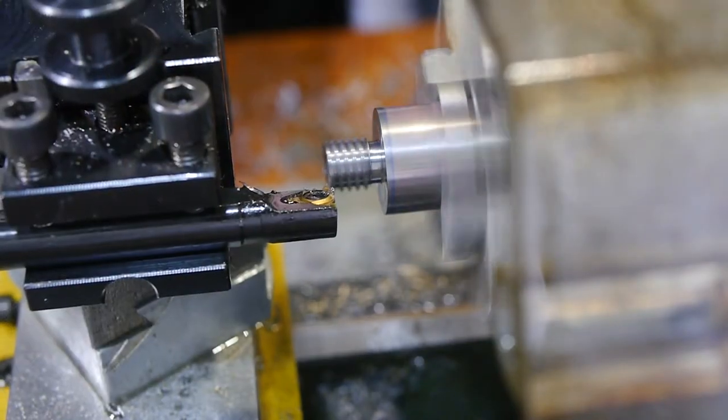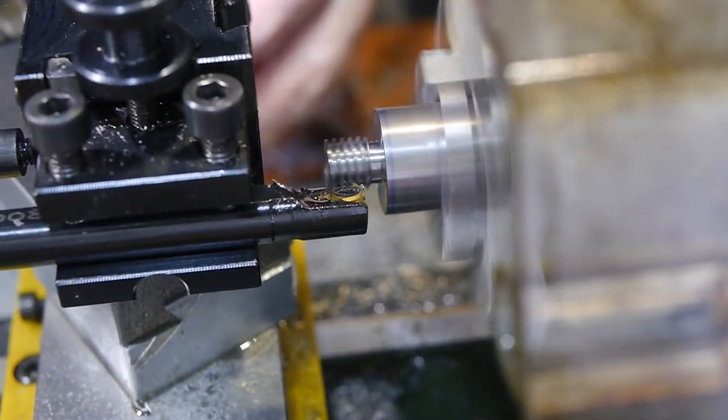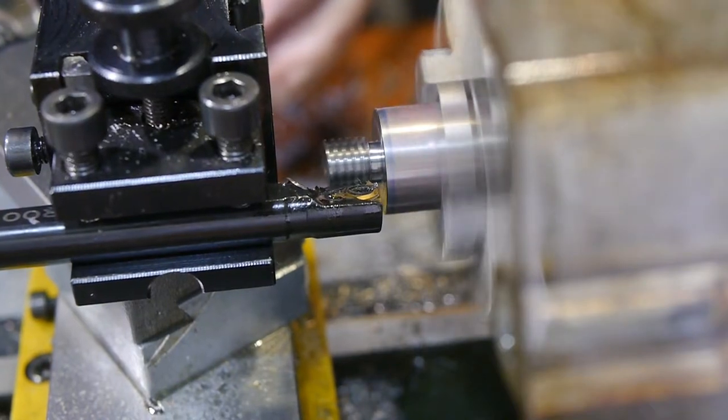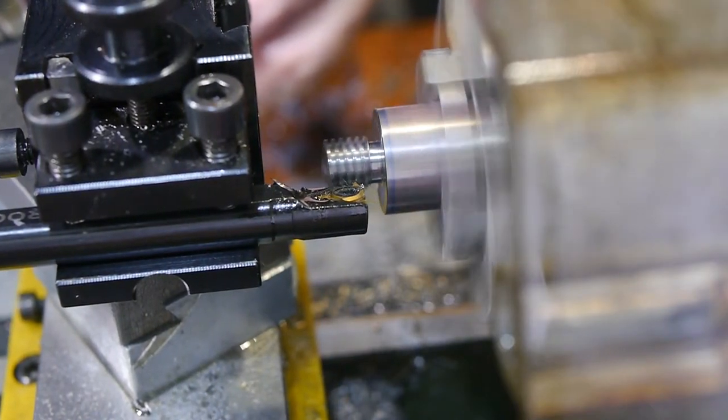Once the thread was cut, I disengaged the screw, returned the dials to the zero point, the original outer diameter, and ran a pass along the thread to remove the protruding burr.